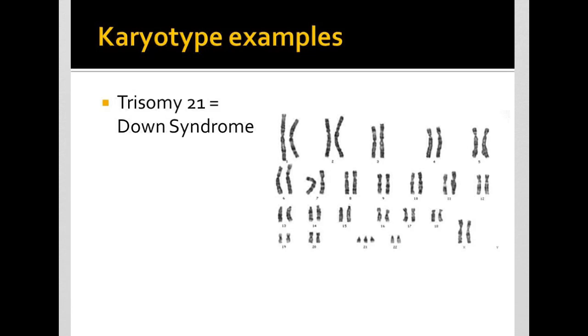A trisomy at 21 is Down syndrome. So that is what causes Down syndrome, is actually non-disjunction. This is a trisomy that someone can live their life with.